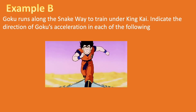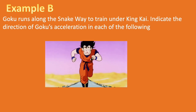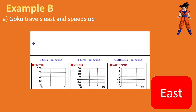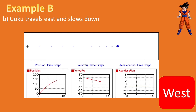Example B: we have Goku running along Snake Way to train under King Kai. Indicate the direction of the acceleration in each case. Case A — Goku is traveling east and speeding up. If something speeds up, there needs to be an acceleration in the direction it's already moving, so the acceleration is east. Part B — travels east and slows down. There needs to be an acceleration opposite his direction to slow him down, so the acceleration is west.